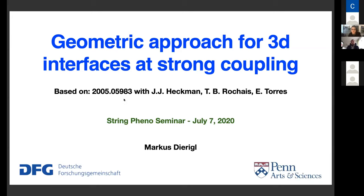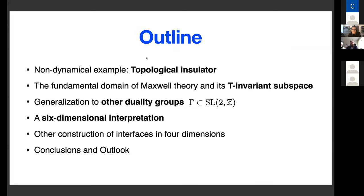The topic is 4D interfaces at strong coupling. I will start by giving a non-dynamical example, which can be found in the condensed matter literature as the topological insulator and the topological insulator interface. Then I will go to a dynamical example — technically just Maxwell theory — where we are interested in the time reversal invariant subspace of the moduli space. We can generalize from SL(2,Z) of Maxwell theory to a duality group that is only a subgroup, which has a nice interpretation in terms of a six-dimensional setup.